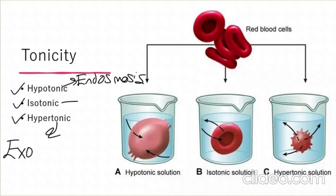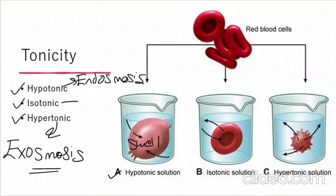In a hypertonic solution, exosmosis occurs — the cell has more concentration inside and less in the environment, so water moves out and the cell shrinks. Summary: hypotonic → cell swells (endosmosis); isotonic → no change; hypertonic → cell shrinks (exosmosis). Animal cells can burst in hypotonic solution, but plant cells are protected by the cell wall's turgid force which prevents bursting.